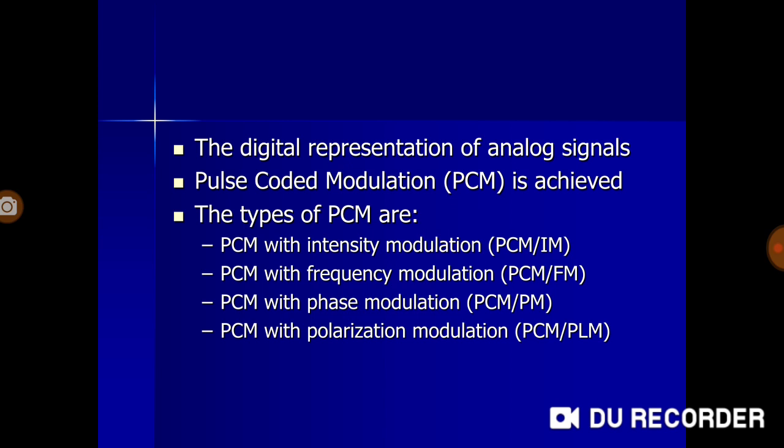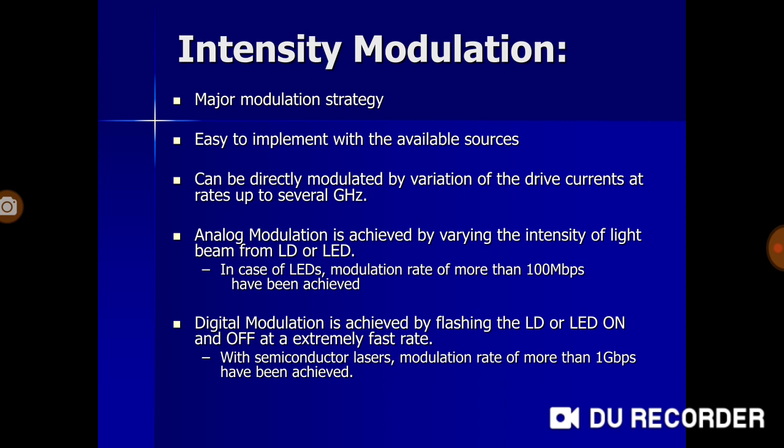Intensity modulation is the major modulation strategy and is easy to implement with available sources. It can be directly modulated by variation of the drive currents at rates up to several gigahertz. We will discuss the drive circuits of LEDs as well as lasers in the next video. For now, we just need to know that varying the drive currents modulates the output light — that is intensity modulation.